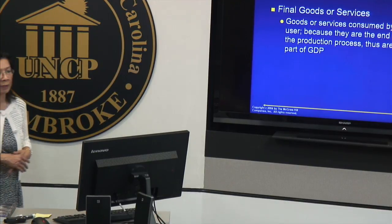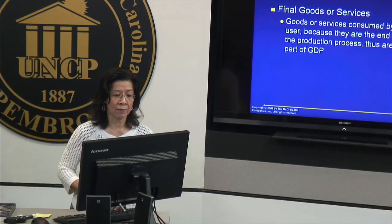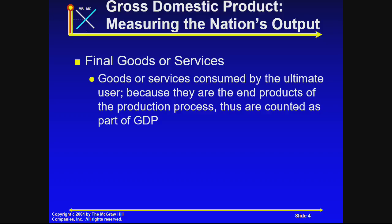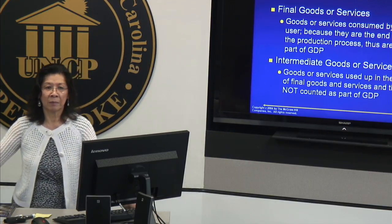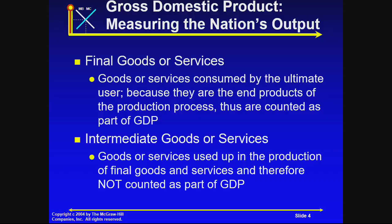The next part of the definition I underlined is 'final goods and services.' The word 'final' here is compared to intermediate goods. Final goods are consumed by the ultimate end user — they are the end products of the production process, and therefore they count as part of GDP. For example, when you go to Best Buy and buy a computer, you bring it home and want it to start running — you don't want to buy individual parts like a monitor, keyboard, motherboard, CD-ROM drive, and power supply to assemble yourself.